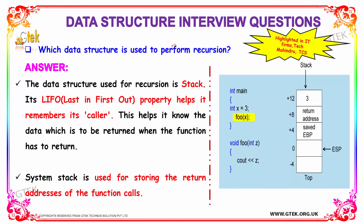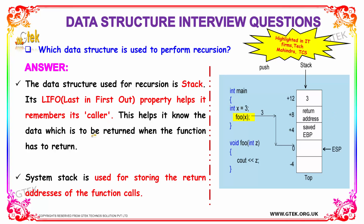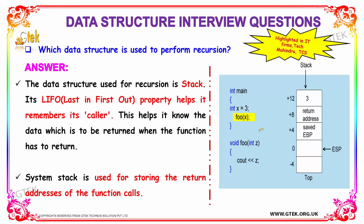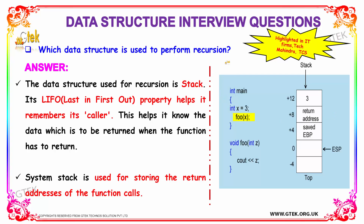Our next question is: which data structure is used to perform recursion? The data structure used for recursion is stack. Stack uses last in first out property that helps to remember its caller. It helps to know the data which has to be returned when the function has to return. Stack is used for storing the return addresses of the function calls. Here, the value of x is stored as 3, and after execution the value is returned as 3. That is done using the stack. These kinds of questions are highlighted in interviews at Tech Mahindra and TCS.